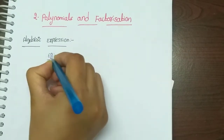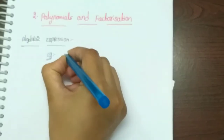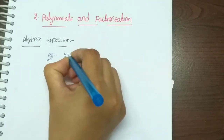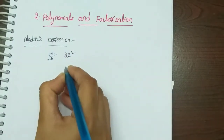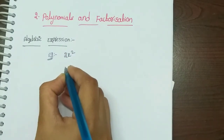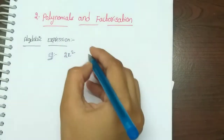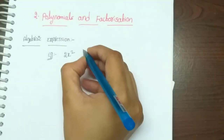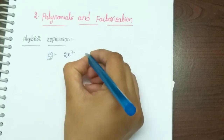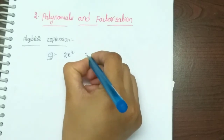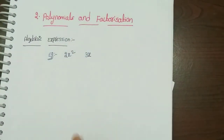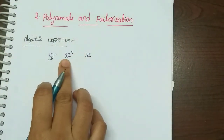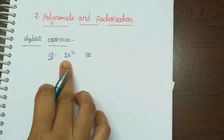Let's take an example. 2x squared — this is a single term, it is not a combination of terms. 3x — this is also a single term.